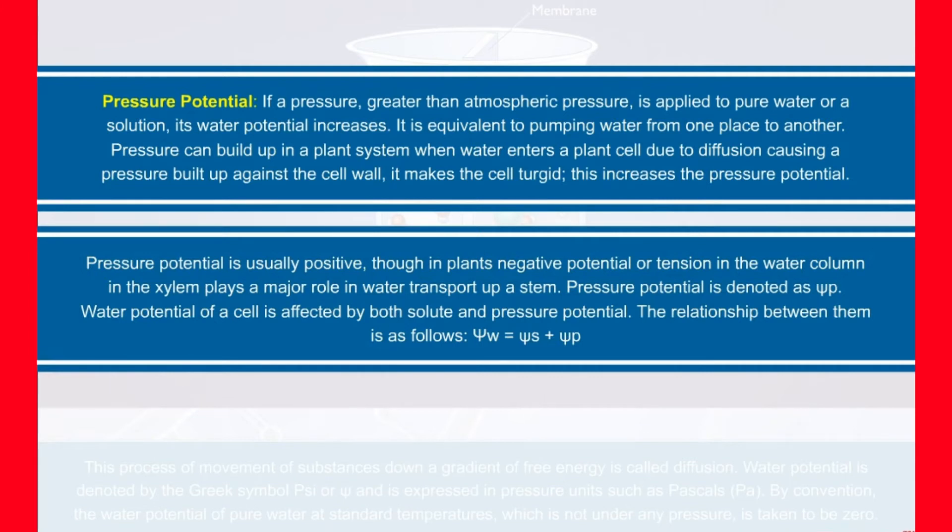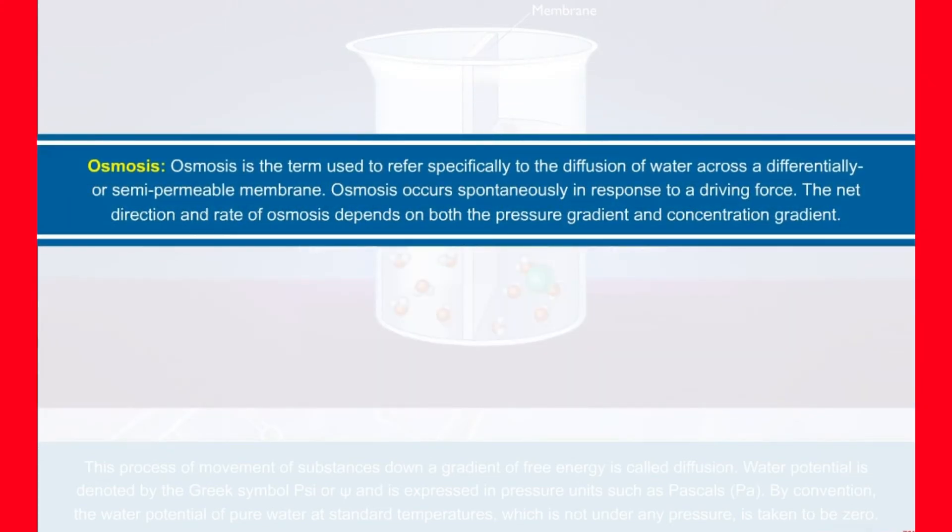Pressure potential is usually positive. Though, in plants, negative potential or tension in the water column in the xylem plays a major role in water transport up a stem. Pressure potential is denoted as ψp. Water potential of a cell is affected by both solute and pressure potential. The relationship between them is as follows: ψw = ψs + ψp.